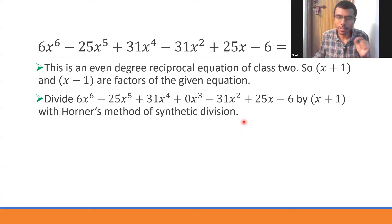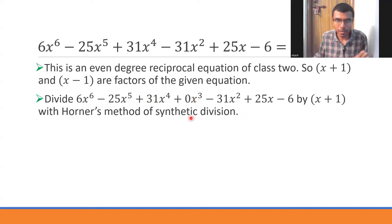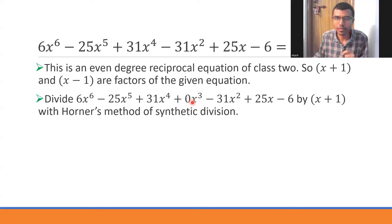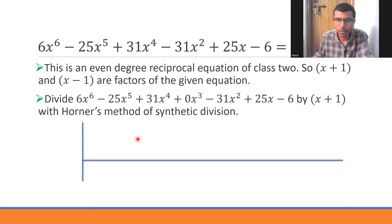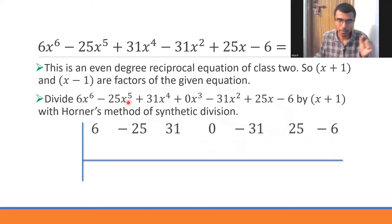If you're not familiar with Horner's method, don't worry — stay with me and you'll understand it. Notice that the x³ term is absent, so I write its coefficient as 0. In this method, all coefficients must be mentioned even if a term is missing — write its coefficient as 0. Make two lines and write down all the coefficients: 6, -25, 31, 0, -31, 25, -6.